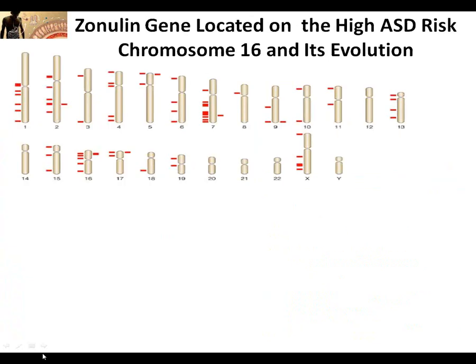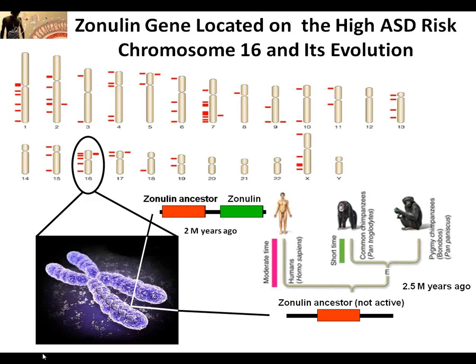Interestingly, the gene encoding zonulin sits on chromosome 16, which has a high abundance of mutations related to autism. Only humans produce zonulin — other animals including our closest relatives, chimpanzees, do not. On chromosome 16 there are genes related to three major disease categories: immune disease, cancer, and diseases of the nervous system including autism and MS. Many investigators have been looking at zonulin as a biomarker for specific diseases, including diseases of the nervous system such as MS, schizophrenia, and recently autism spectrum disorders.